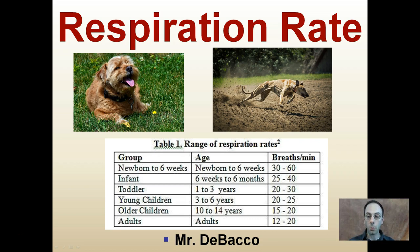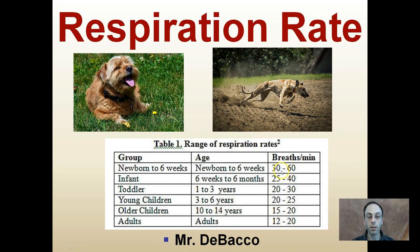Our respiration rate — we may think of breaths per minute as a way to measure respiration. And you can see here, by the age of an individual (looking at humans), the breaths per minute does change. Newborns to six weeks have the highest breaths per minute, anywhere from 30 to 60 considered normal. As we age, our breaths per minute decrease, with adults being somewhere in the range of 12 to 20.